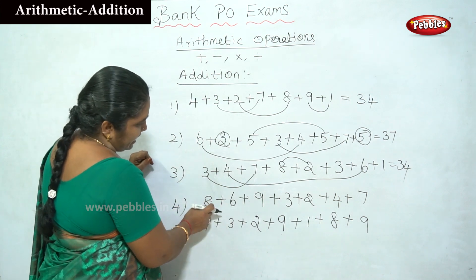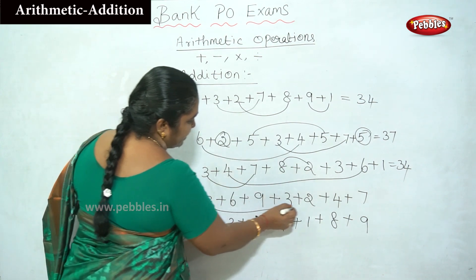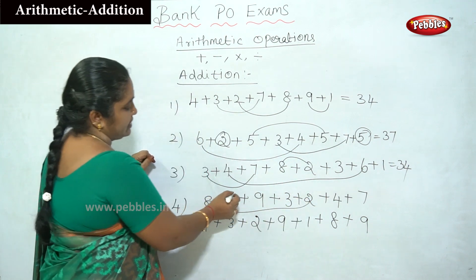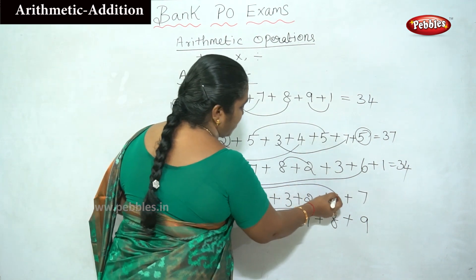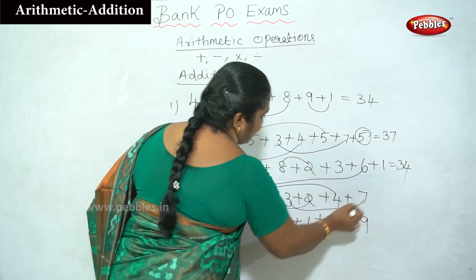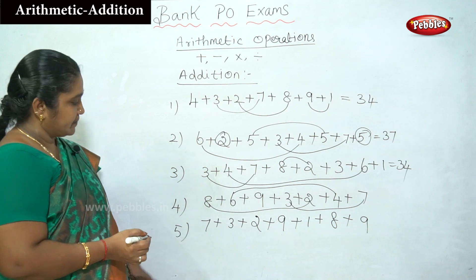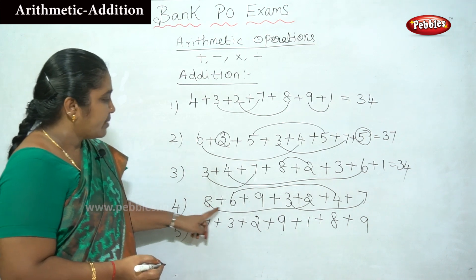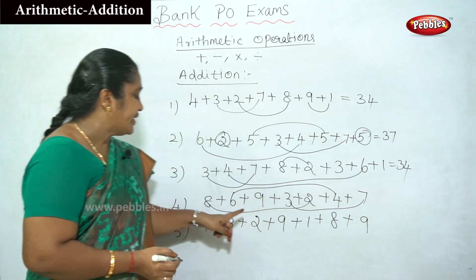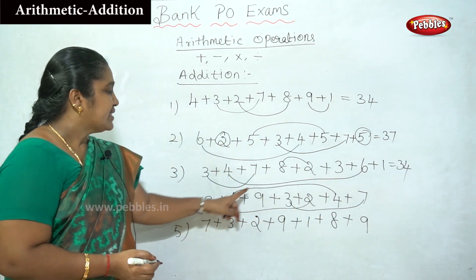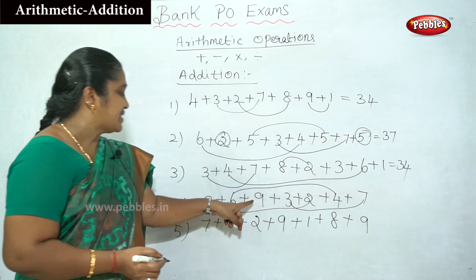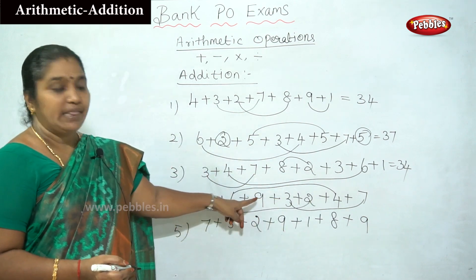Let us see another example. 8 plus 2 is 10. Then 6 plus 4 is 10. Then 3 plus 7 is 10. So: 8 plus 2 is 10, 3 plus 7 is 10 — that is 20. Then 6 plus 4 is 10 — that is 30. The remaining digit is 9. So 30 plus 9 is 39.